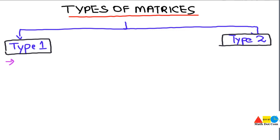Today we will discuss the different types of matrices and the easiest way to remember so many types. Basically, the matrices are not divided into any categories in mathematics. We came across different types such as a null matrix, row matrix, or column matrix, but they are not categorized under a specific category. For our ease, we have divided the matrices into two types: Type 1 and Type 2, so that you can easily remember them.